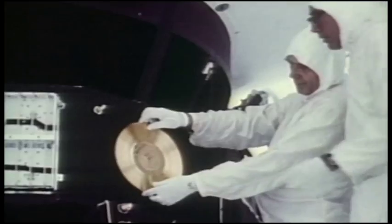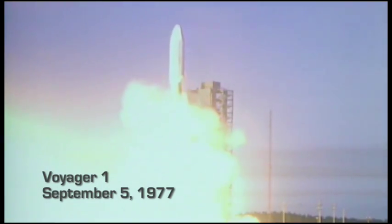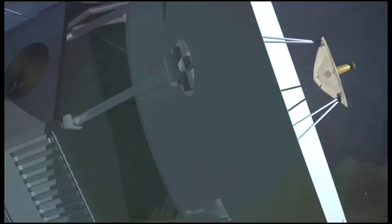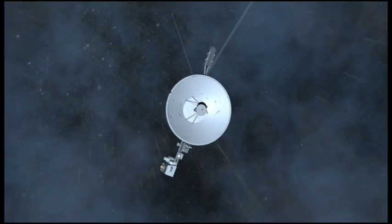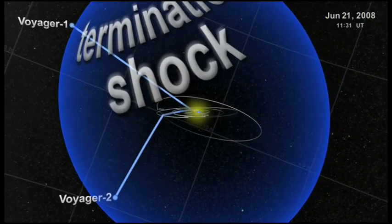Over 30 years ago, Voyager 1 and 2 set out for Jupiter, Saturn, and beyond. Now as the twin spacecrafts explore the outer reaches some 9 billion miles away from Earth, they have crossed the heliosphere, the bubble of supersonic solar wind.